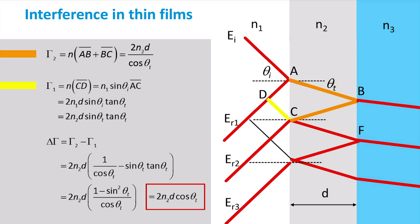The optical path length difference between the two waves can now be calculated by subtracting one from another. Through geometrical relations we obtain a phase shift of 2 times the product of the thickness and refractive index of the Rayleigh film multiplied by the cosine of θt.